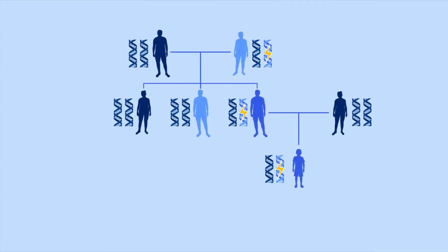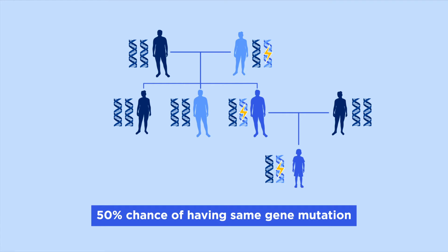The chance that you share the mutation your blood relative has depends on how closely related you are to them. If one of your biological parents, siblings, or children has the mutation, that means you have a 50% chance of having the mutation too.